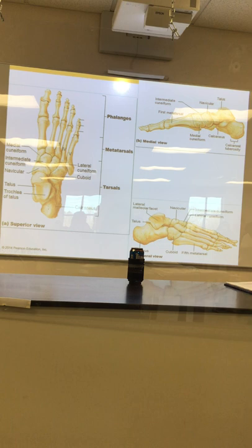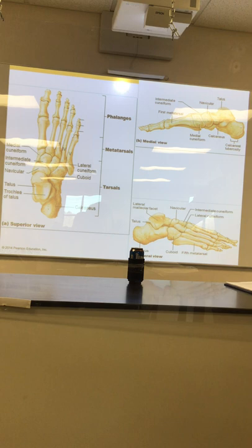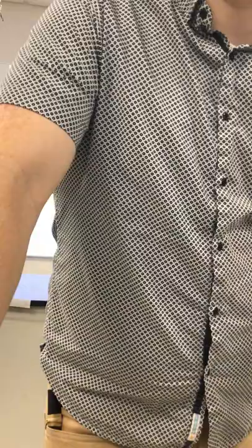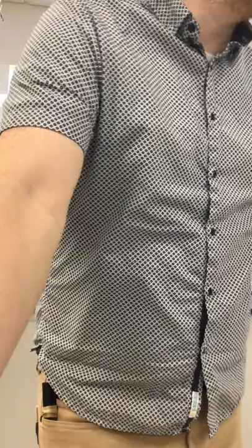And then of course we have tarsals, metatarsals, and phalanges. Metatarsals are the top of your foot, and then phalanges. That's tarsals, metatarsals, phalanges. A student asked if the metatarsals are in the ball of the foot like metacarpals are in the palm. I feel like it's similar — there may be a little more overlap in the foot. The big toe isn't that big, so I think they're a little more inset in the foot.